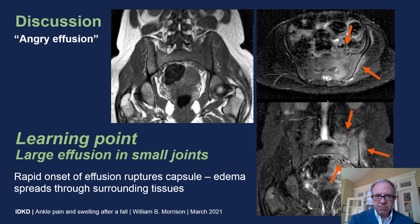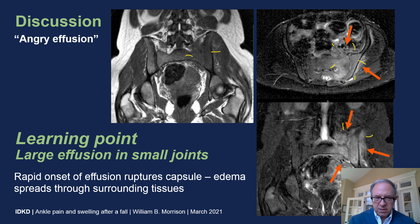Here's a different case with septic sacroiliitis to illustrate what I mean by 'angry effusion.' At the left sacroiliac joint we can see diffuse marrow replacement around the SI joint, diffuse bone marrow edema, and soft tissue edema around the SI joint itself extending into the adjacent soft tissues. This is the result of a small capacity joint with a rapidly expanding joint effusion, resulting in rupturing of the capsule and surrounding periarticular soft tissue edema.